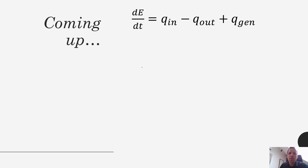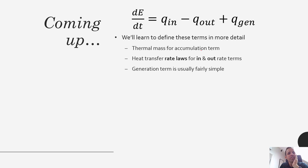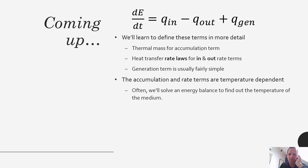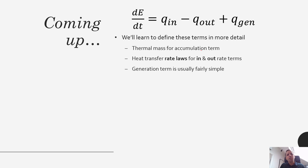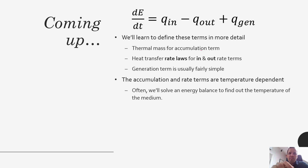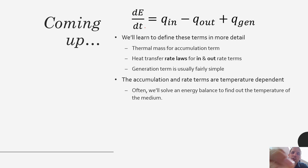Coming up, we'll learn how to quantify each of these terms in more detail. The thermal mass used for the accumulation term involves units of density, heat capacity, and change in temperature with time. The heat transfer rate laws — introduced in the next lectures — will quantify the in and out terms. The generation term is usually fairly simple. Each term will eventually be temperature dependent, leading to more algebra and calculus, including ordinary and partial differential equations. But all of that still comes down to this very basic energy balance system.